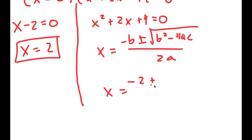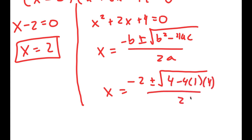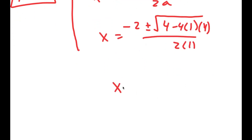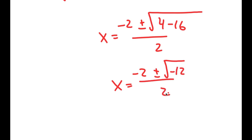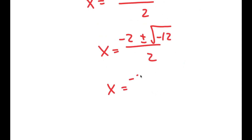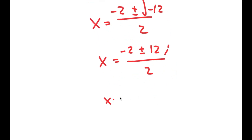Using the quadratic formula I get negative 2 plus or minus the square root of 4 minus 4 times 1 times 4, all over 2 times 1. This gives negative 2 plus or minus the square root of 4 minus 16, over 2, which is negative 2 plus or minus the square root of negative 12, over 2. That equals negative 2 plus or minus 2√3·i over 2, which simplifies to negative 1 plus or minus √3·i.